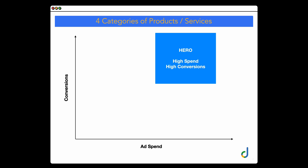There are four different categories of products or services. First are our hero products or services — these have high spend and a high amount of conversions. Then we have our sidekick products or services — they've got a high level of conversions but a low spend. For our hero products, we want to continue spending more and more because the more we're spending, the more conversions we're getting. But for sidekick products, we want to run some tests because they're getting low spend but high conversions.